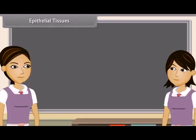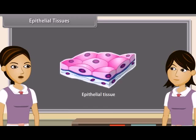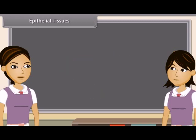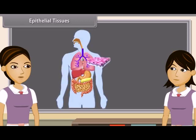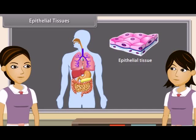Epithelial tissues: tissues which cover all the organs of body externally and also line hollow organs internally are known as epithelial tissue. The cells of epithelial tissue are tightly packed and form a continuous sheet. There is no intercellular space and matrix between these cells. Epithelial cells are present in skin, lining of buccal cavity, alimentary canal, kidney tubules, lungs and glands.